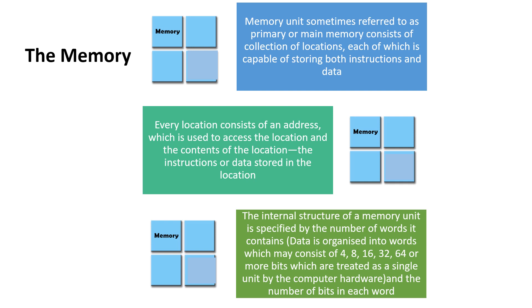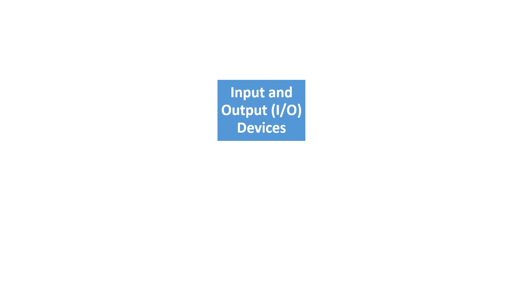The internal structure of the memory unit is specified by the number of words — data organized into words which may consist of 4, 8, 16, 32, or more bits, treated as a single unit by the computer hardware — and the number of bits in each word.